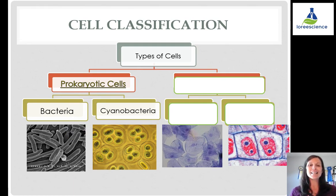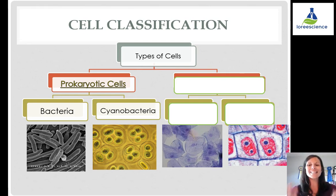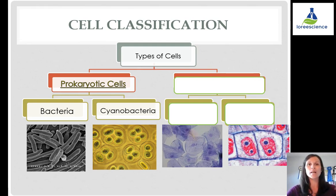Prokaryotic cells don't have any membrane-bound organelles, meaning they don't have a true nucleus. Their genetic material is just floating around inside the cell without a protective nucleus. They also don't have other membrane-bound organelles such as mitochondria, chloroplasts, Golgi bodies, or ER.